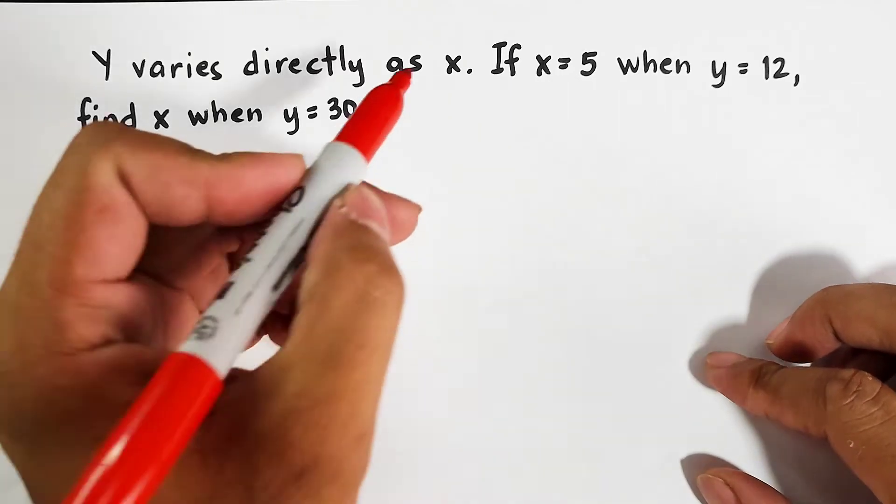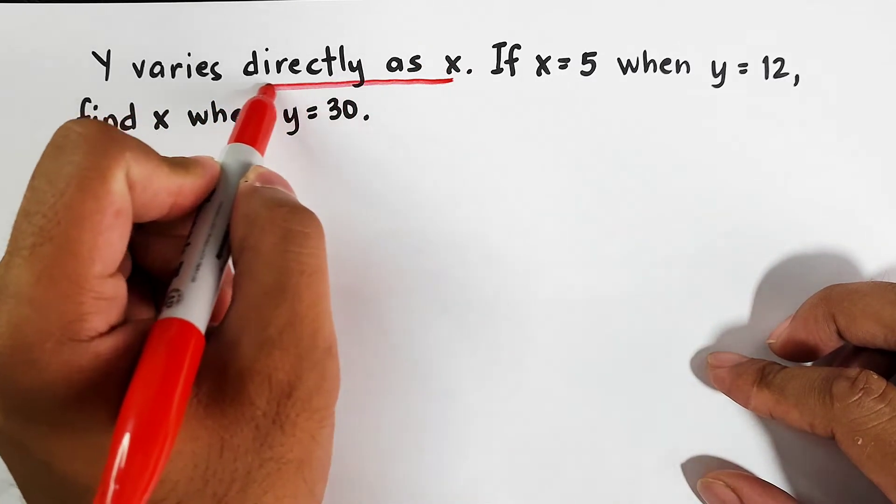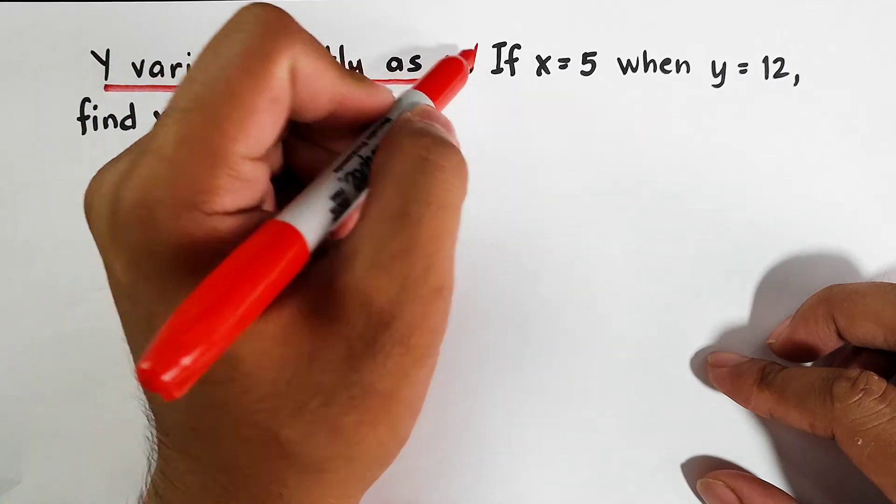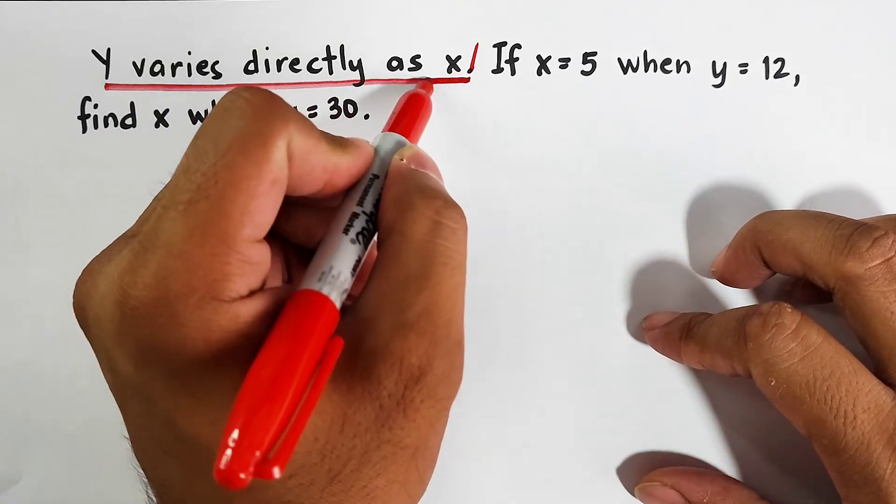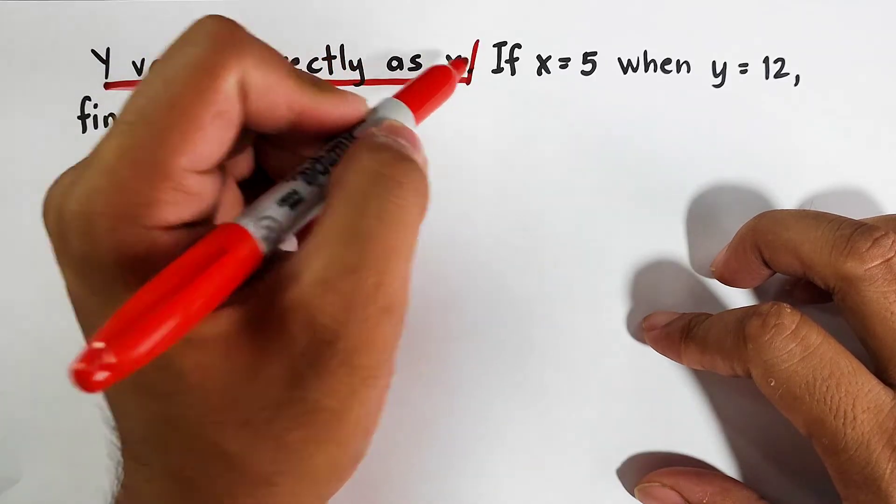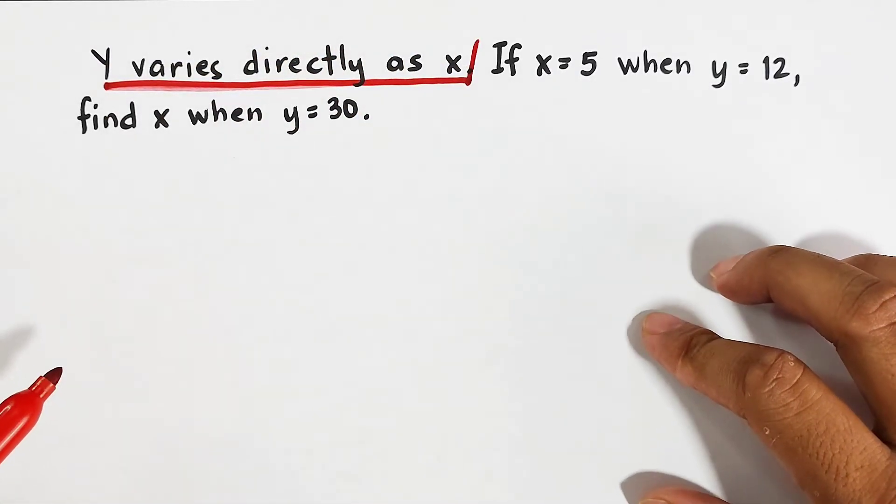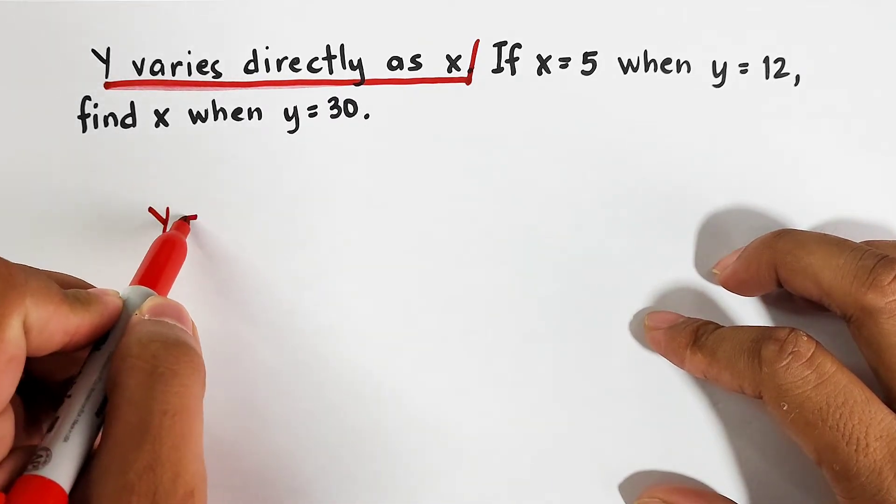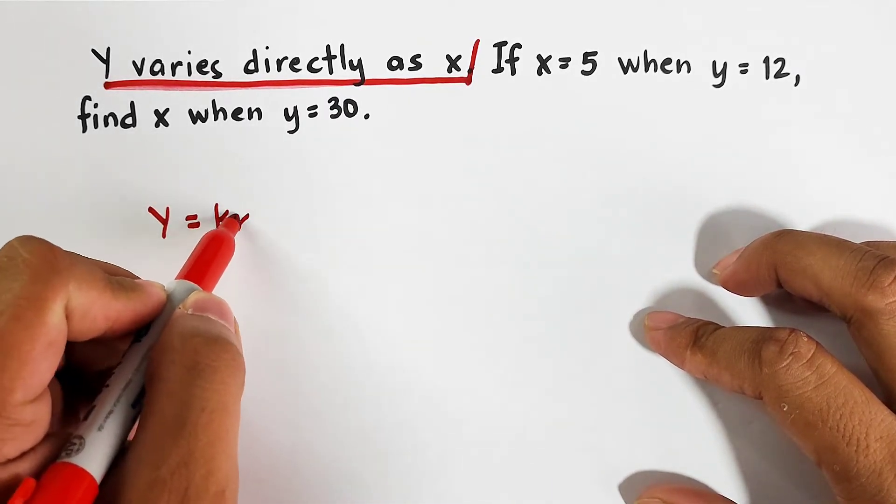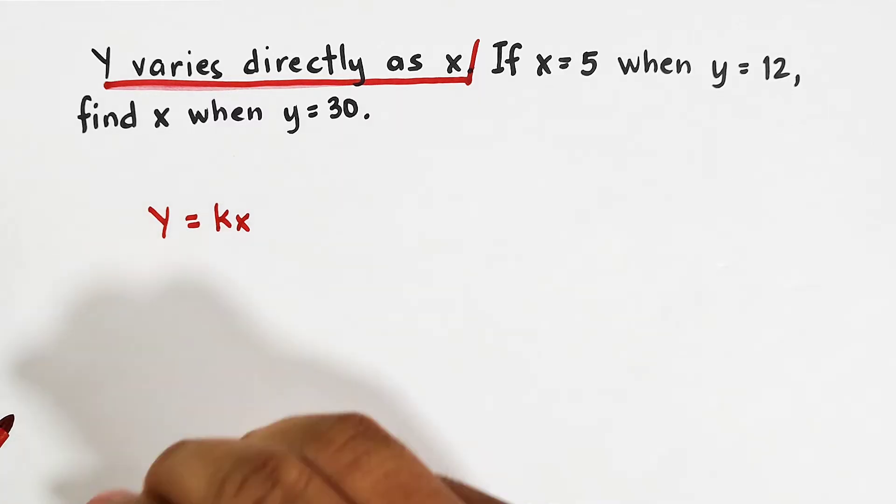The first part is this one. The purpose of this first part is that we will convert this first as our general formula. Again, y varies directly as x. This statement can be converted as y is equal to kx. This is our general formula, or general equation in this problem.